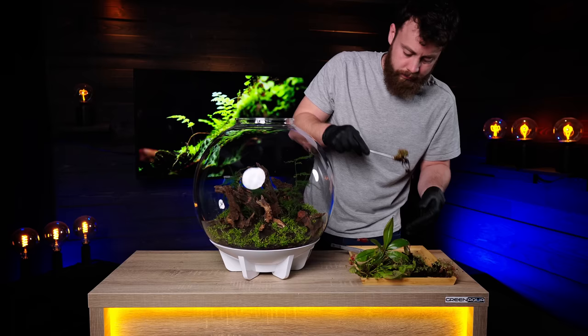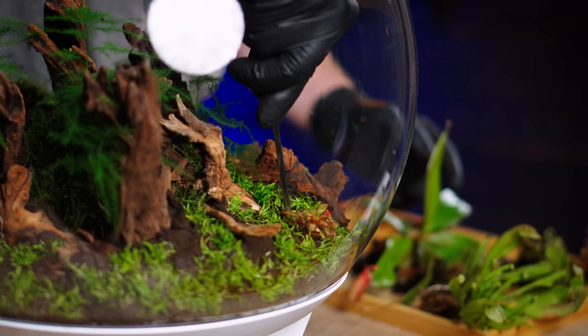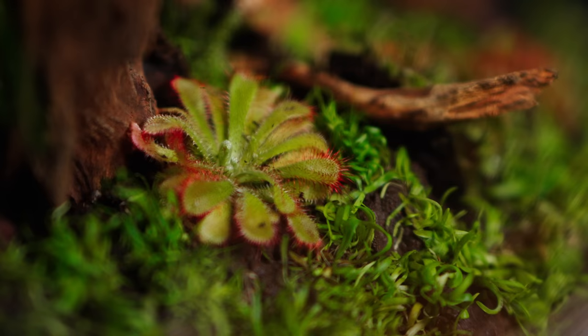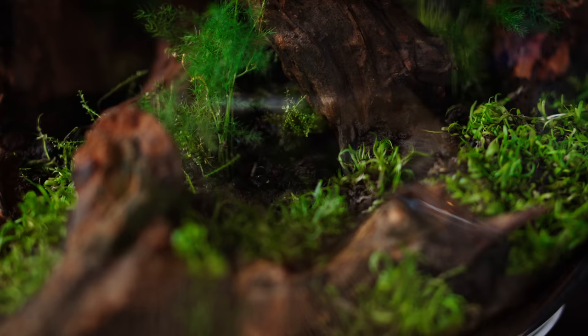Now, the real stars of the show, the carnivorous plants. He's first planting the smaller droseras at the front. They're commonly known as sundews. They originate from damp swamps. That's why he plants them at the lowest points of the terrarium, where the moisture content of the soil is the highest. That's because they appreciate a little more humidity than the rest of the carnivorous plants.